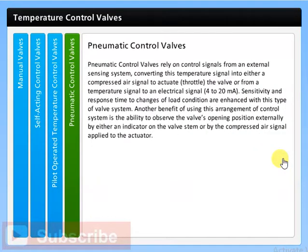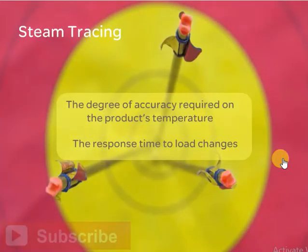Pneumatic control valves rely on control signals from an external sensing system, converting the temperature signal into either a compressed air signal to actuate the valve or from a temperature signal to an electrical signal. Sensitivity and response time to changes of load condition are enhanced with this type of valve system. Another benefit of using this arrangement is the ability to observe the valve's opening position externally by either an indicator on the valve stem or by the compressed air signal applied to the actuator. The deciding factors for the selection of the proper control valve system for a specific application are the degree of accuracy required on the product's temperature and the response time to load changes.